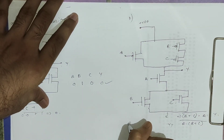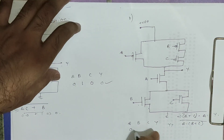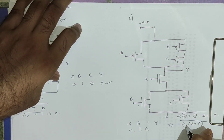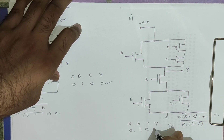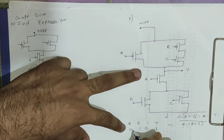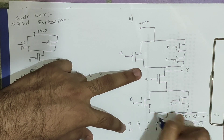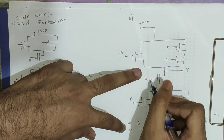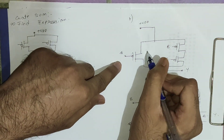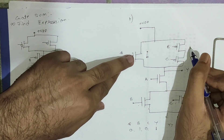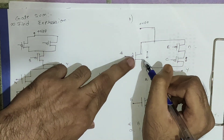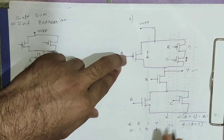Verifying for A=0, B=1, C=0: 0·(1+0) complement = 0 complement = 1, so Y=1. From the circuit: A=0 so the series NMOS is disconnected, meaning this path is disconnected. On the PMOS side, A=0 so this PMOS is ON and VDD gets connected to the output, giving output 1. The combination is verified.